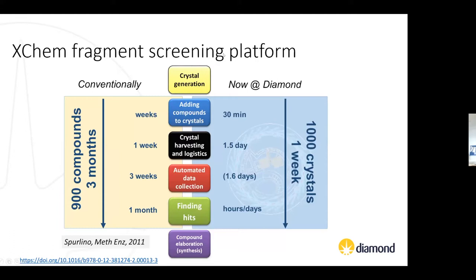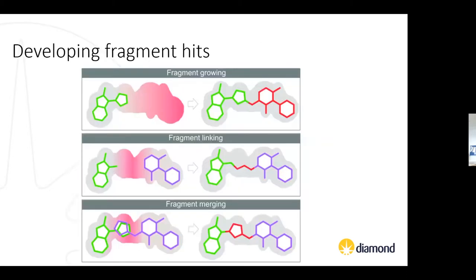To give a flavor of how revolutionary this platform is: in order to screen 1,000 crystals — so 1,000 fragments — this takes typically around one week of time in XChem. In comparison, using traditional crystal soaking techniques with a lot more manual handling, this would take around three months, with much more potential for human error in data tracking. Once you have your hits, they can be developed into more potent compounds, and the three obvious ways for developing fragments are growing, linking, and merging.